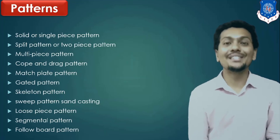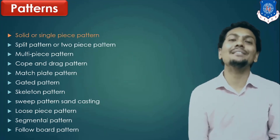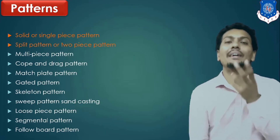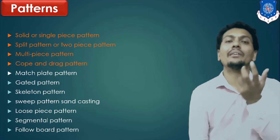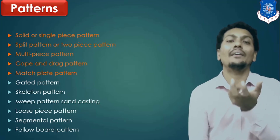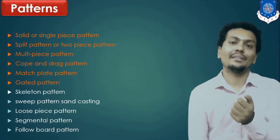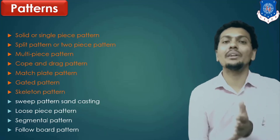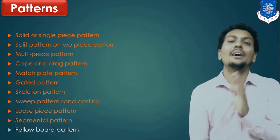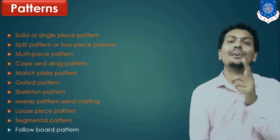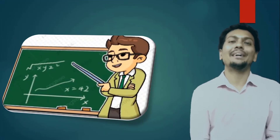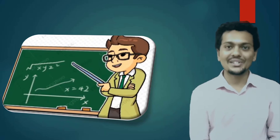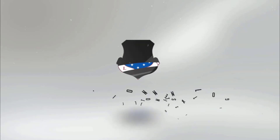So this is all about different types of patterns. All you have to do is take the pattern and with help of it, create the cavity, and after that remove your pattern. So here I mentioned the summary for different types of patterns — your purpose is the same: to make the cavity with help of pattern. This is all about different types of pattern in today's session. Thank you all.